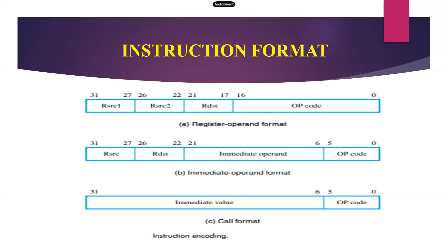The next one is the immediate operand, that is I format instruction. Out of 32-bit, the first 0 to 5 — that is 6 bits — will be allocated for opcode. The next bits from 6 to 21 are for immediate operand, which is either a constant value or the address of the operand. In case of load or store instruction, we specify the address; for add immediate or subtract immediate, a constant value is used. The next bits from 22 to 26 are 5 bits for destination, and another 5 bits for source operand.